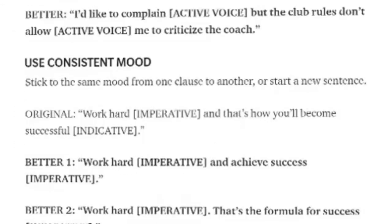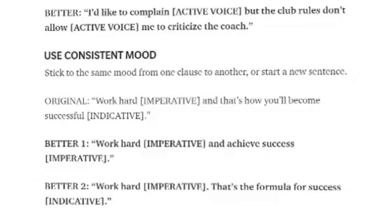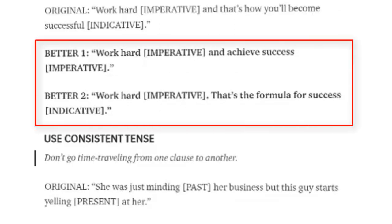Use a consistent mood — stick to the same mood from one clause to another, or start a new sentence. For example: 'Work hard' — imperative mood — 'and that's how you'll become successful' — indicative mood. Much better: 'Work hard and achieve success.' Both clauses are in imperative mood. Or: 'Work hard.' — imperative — then start a new sentence: 'That's the formula for success.' — which is indicative.